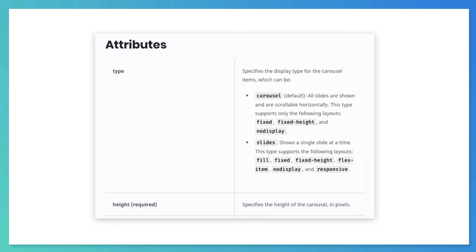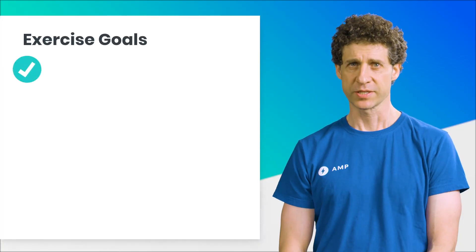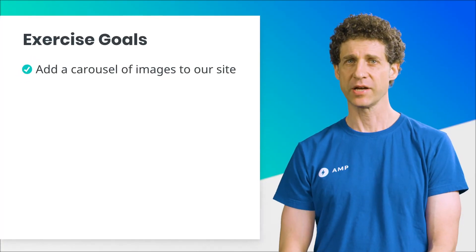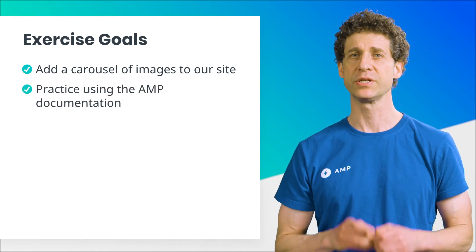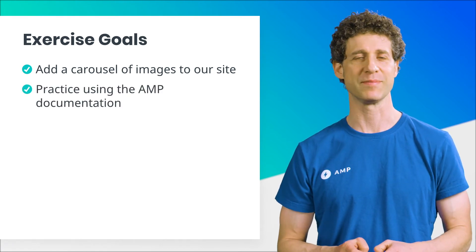For AMP Carousel, the valid inputs for type include slides and carousel. This means if you don't specify a type at all, the default will be carousel. Now let's do exercise five, in which we'll create the image slideshow. In this exercise, we'll add a carousel of images to our site, and we'll also get to practice using the AMP documentation.